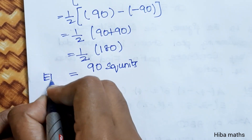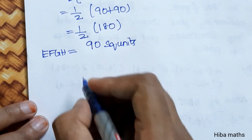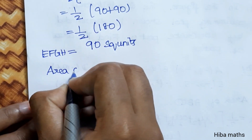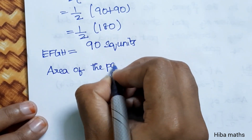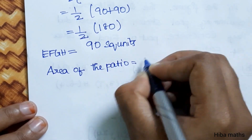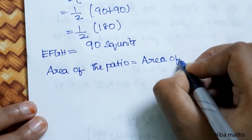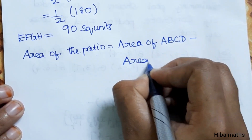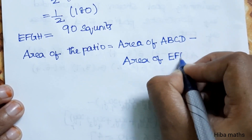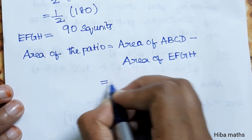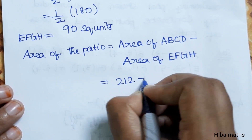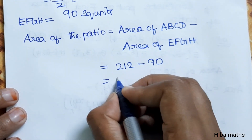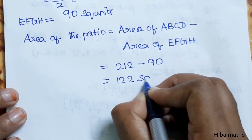Area of path (Pasho) = Area of ABCD minus Area of EFGH. Area of ABCD is 212, area of EFGH is 90. Therefore the area of the path is 212 minus 90 equals 122 square units.